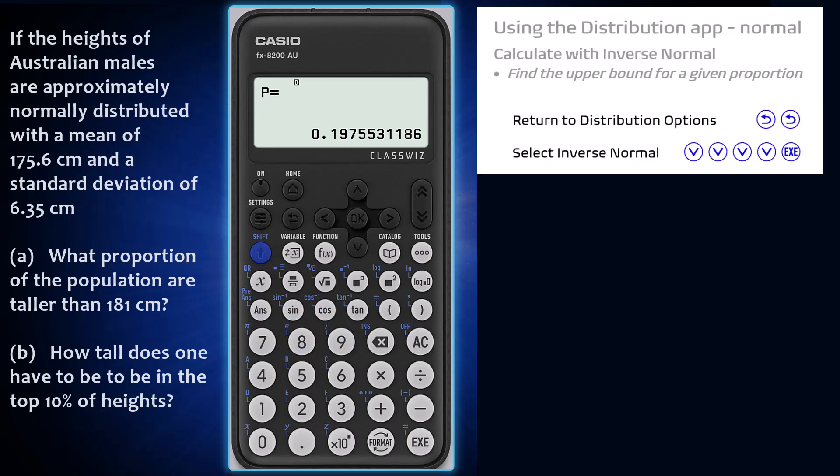To start, make your way to the distribution options. I'll use the back key a couple of times. Now arrow down until the hidden fifth option, inverse normal, is highlighted.